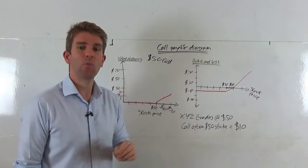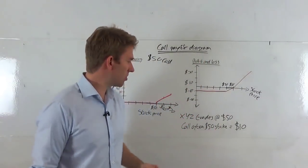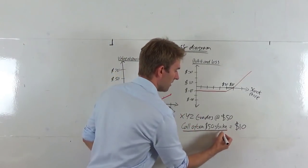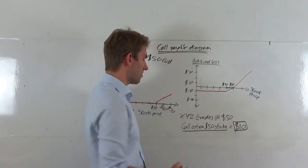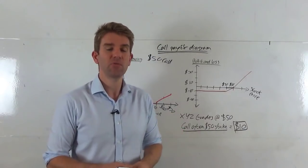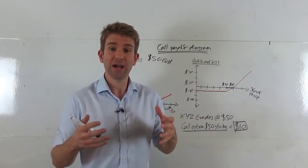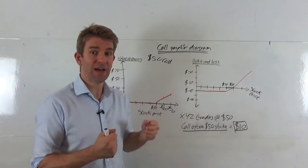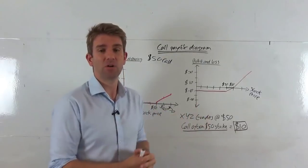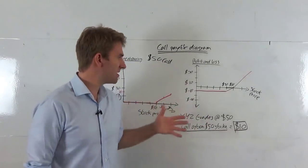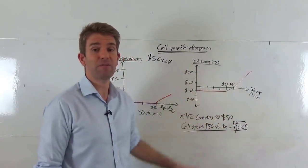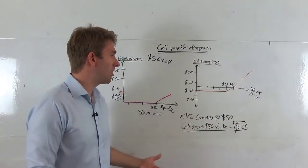The P&L chart is very similar, except it takes into account what we've paid for the option. In this example, we have bought this call option and paid $10 for it — a $50 strike, currently trading at $50, $10 premium. A seller of the option has said they'll take the risk and charged $10 for it. One contract, 100 shares, $10 paid.